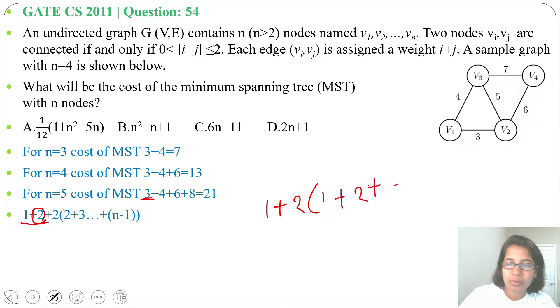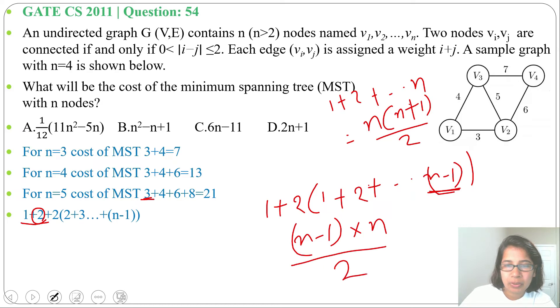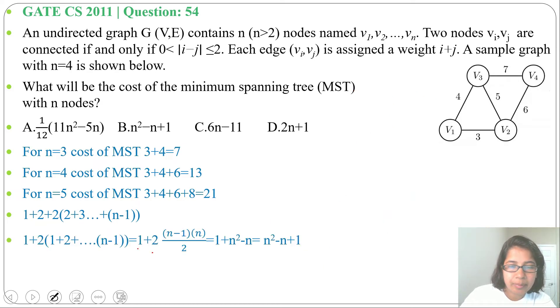Now we can take 2 into the bracket. After taking bracket it will be 1+2×(1+2+...+(n-1)). We know the formula 1+2+...+n = n(n+1)/2. Here last term is n-1, so it will be (n-1)×n/2. We will get 1+2×(n-1)×n/2. Now this 2 will be cancelled. We will get 1+n×(n-1) = 1+n²-n = n²-n+1. It's present in option B, so answer will be option B: n²-n+1.